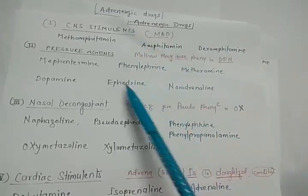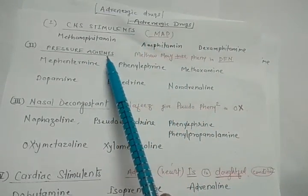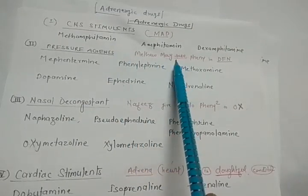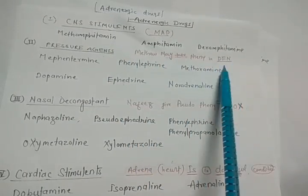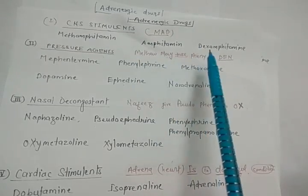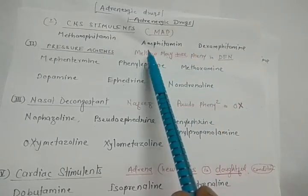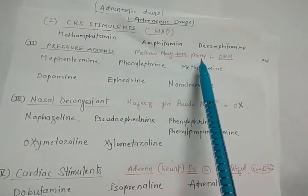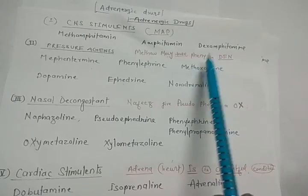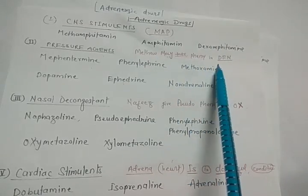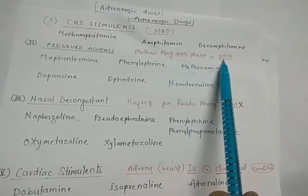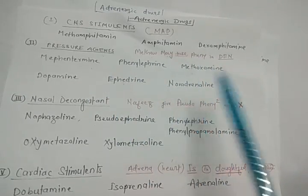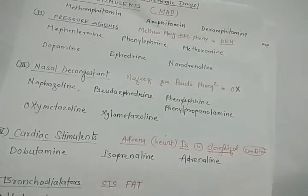For the second category, pressure agent, the trick is: 'Matthew may take Phenny in DEN.' Matthew = methamphetamine, may = mephentermine, Phenny = phenylephrine, D = dopamine, E = ephedrine, and N = noradrenaline.